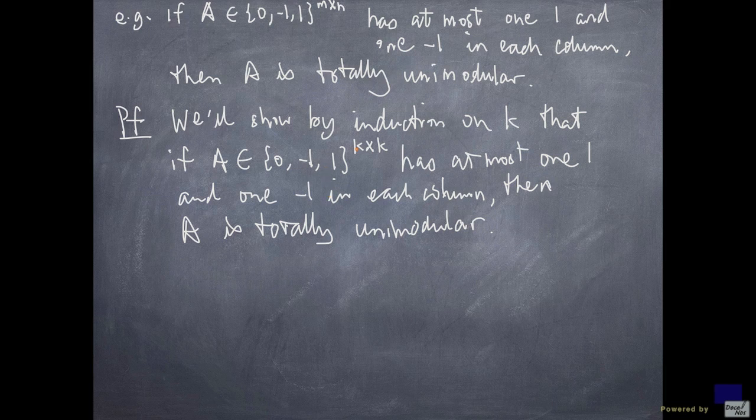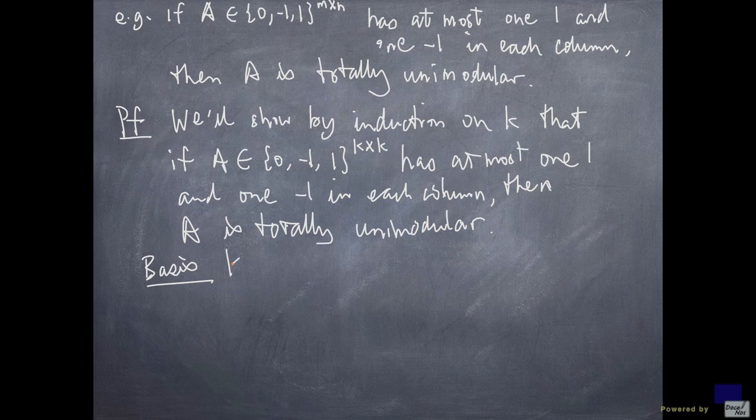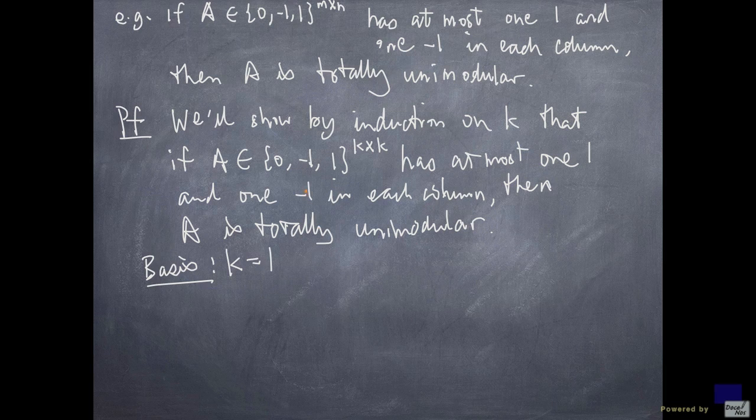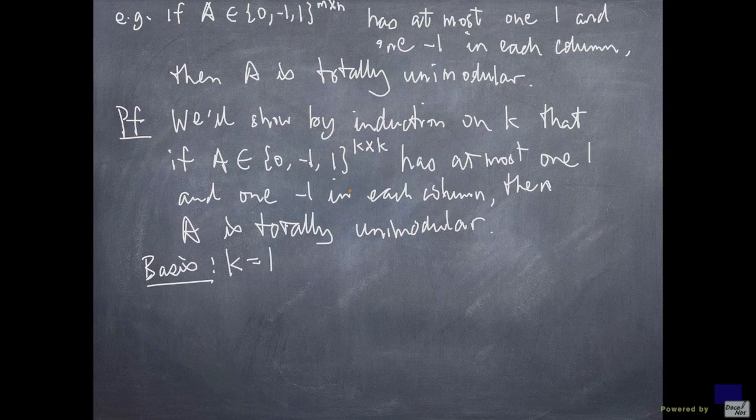Now, we will show by induction that every square matrix having this property is totally unimodular. So, we are proving by induction. So let's start with the basis case, k is 1. If k is 1, then A is a 1 by 1 matrix. Since the possibilities for the entry is 0, minus 1, or 1, then the determinant is 0, 1, or minus 1. So A is totally unimodular. So that's done.